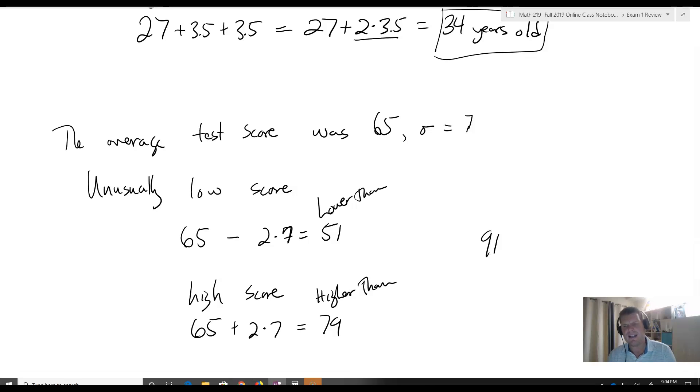On the other hand, if you said, hey, I got a 72—is that unusually high? The answer is no, it's not. Anything higher than 79 is unusually high. Anything lower than 51 is unusually low.